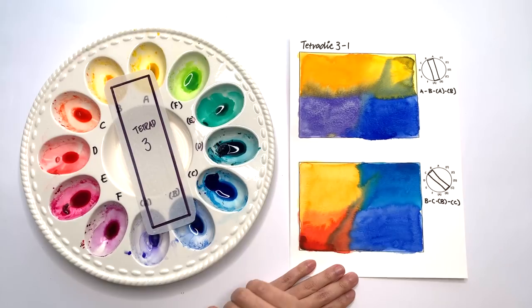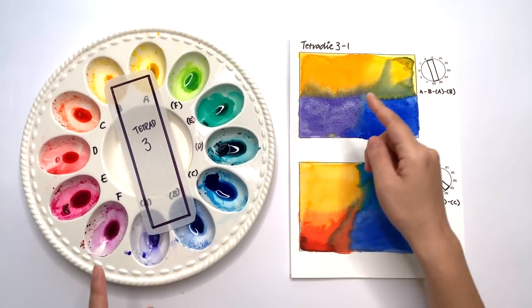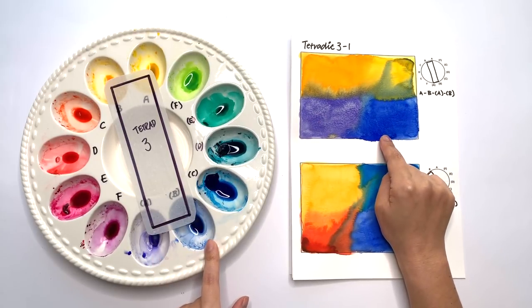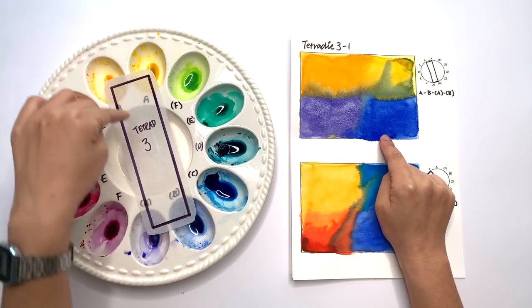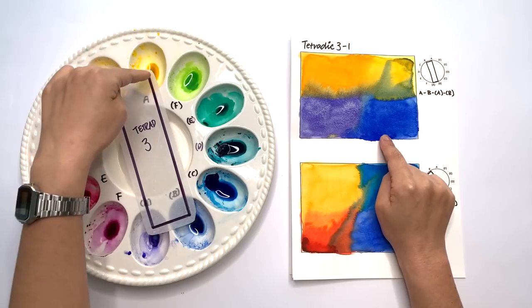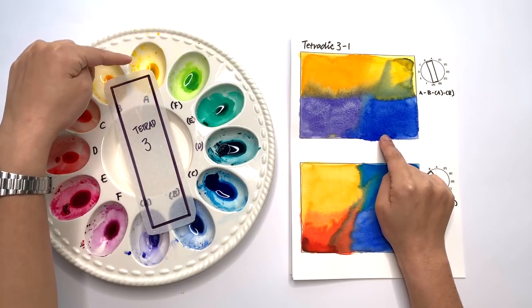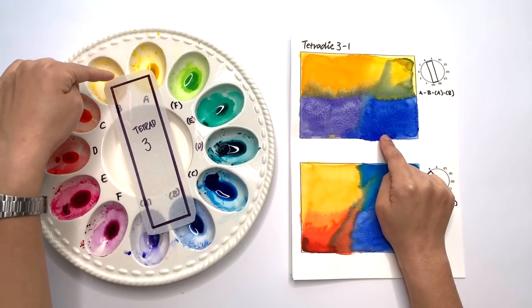First one we have A and B, A and B, and then the A bracket and then the B bracket. The only thing you have to be careful with this particular tetrad is that because you have a complementary color, but also the other color that's involved on the other side of the color wheel is also quite close to the complementary color.